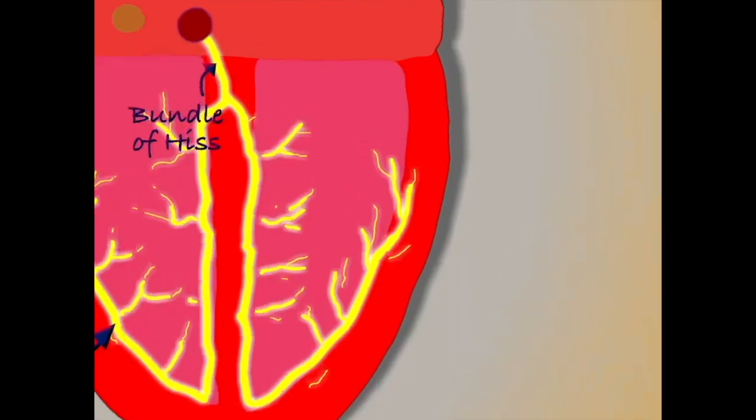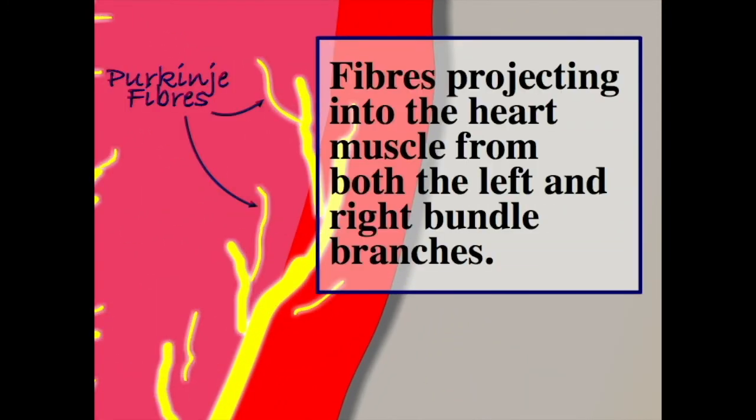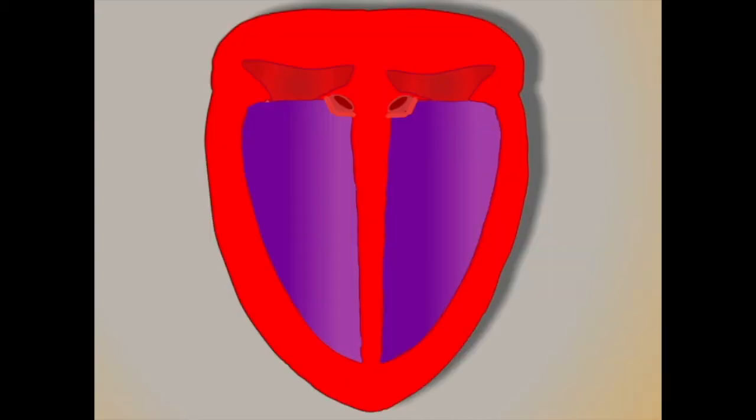Coming from both bundle branches are fibers, projecting into the cardiac muscle, that cause the muscle to contract when activated. The net result is that both ventricles contract simultaneously.